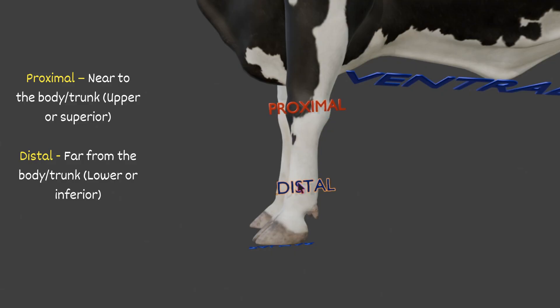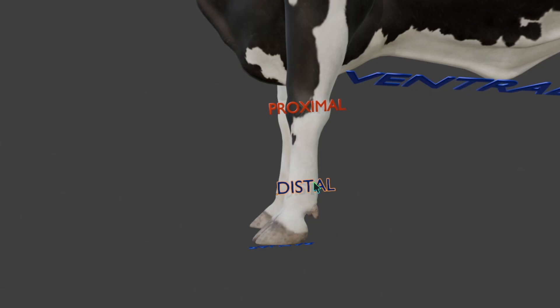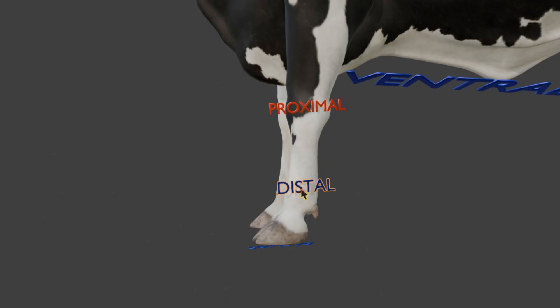Distal means far away from the body or trunk, or we can say lower or inferior. When describing a limb, the upper part is called proximal and the lower part is called distal. Proximal means near to the body or trunk; distal means far away from the body or trunk.